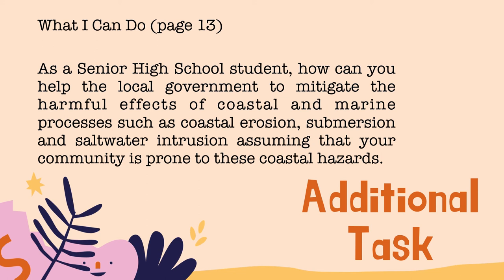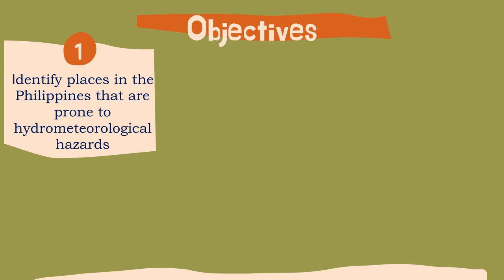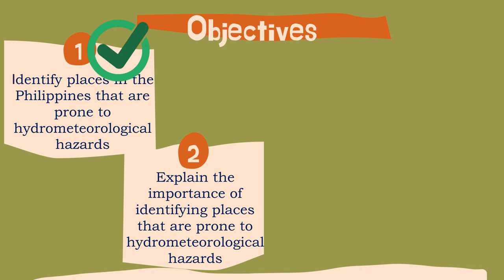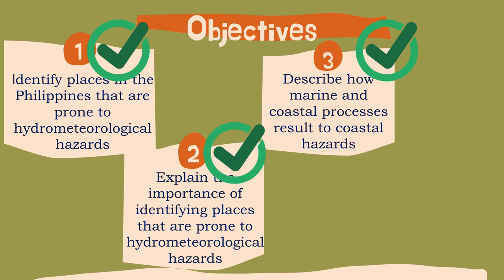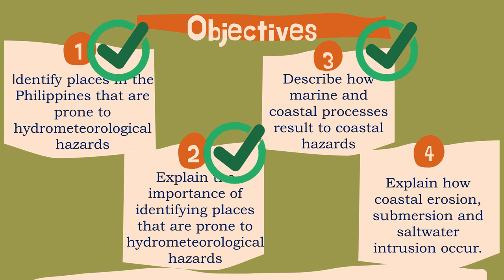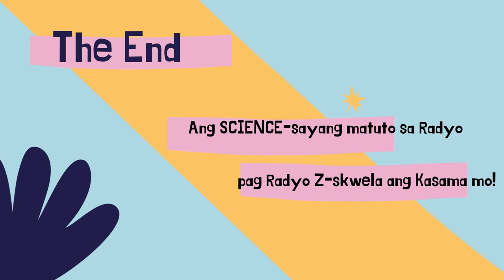Now let's go back to our objectives to see if you were able to achieve them. Identify places in the Philippines that are prone to hydrometeorological hazards — check! Explain the importance of identifying places prone to hydrometeorological hazards — check! Describe how marine and coastal processes result in coastal hazards — check! And explain how coastal erosion, submersion, and saltwater intrusion occur — check! That's the end of our lesson for today. I hope that you learned a lot! See you all next time in our session on air. Again, this is Teacher Rex saying, ang sayang-sayang matuto sa radyo, pag Radio Z-Skwela ang kasama mo! Goodbye!